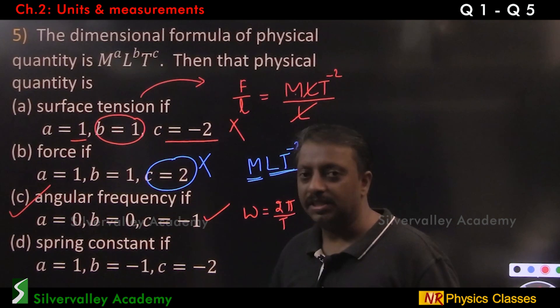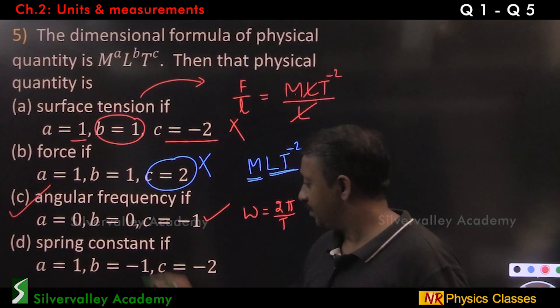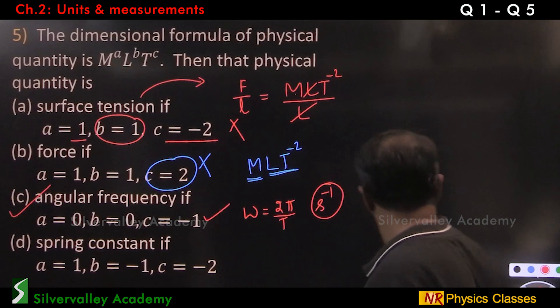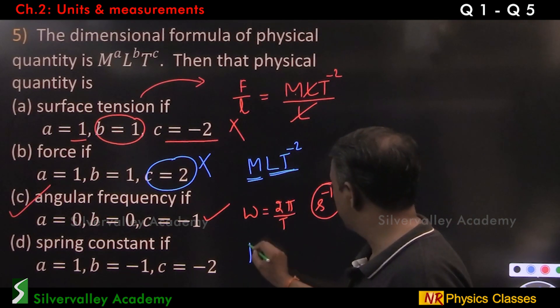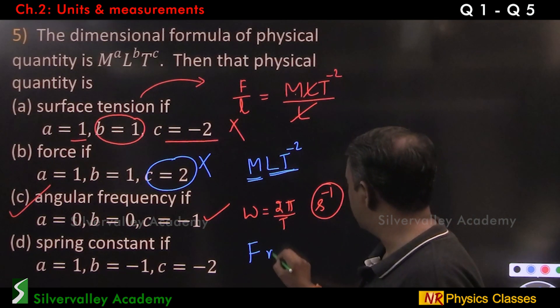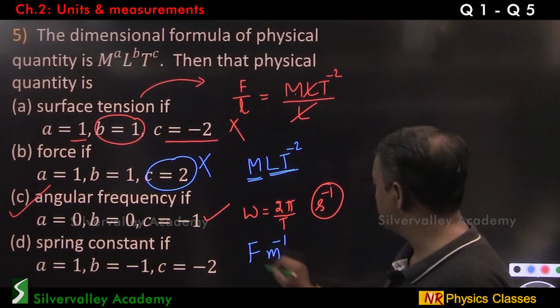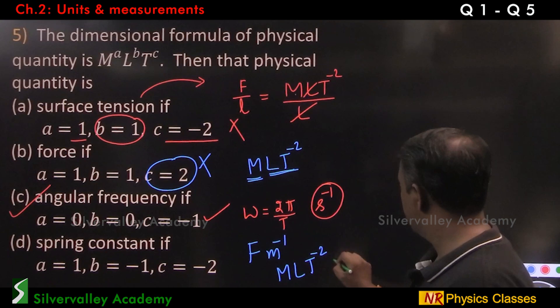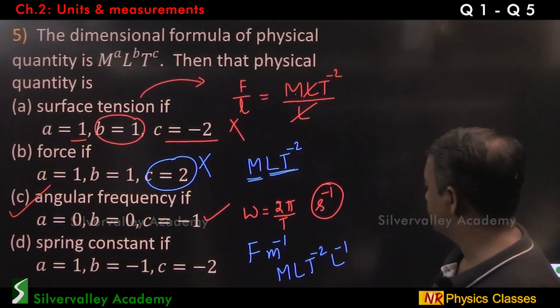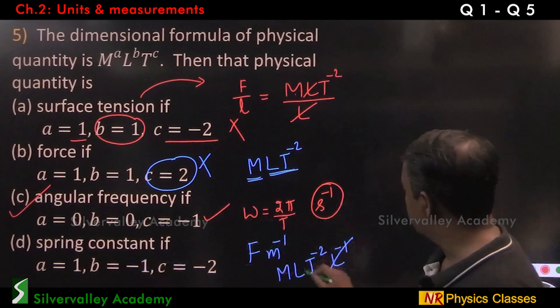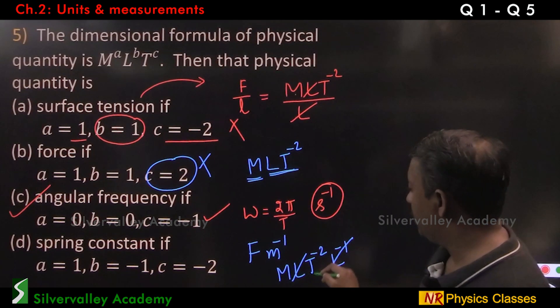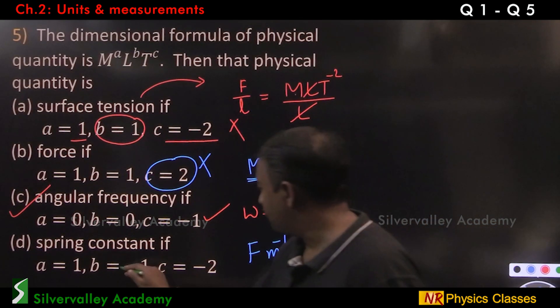Spring constant. Since it is practice session, let us check that. Spring constant is force per length. So, F is M L T minus 2. This is L minus 1. So, this L cancels with this. M T minus 2.